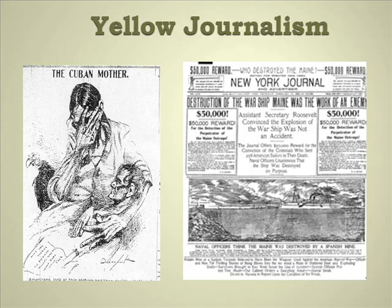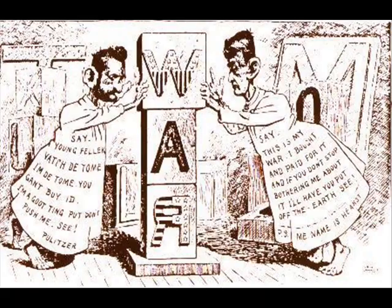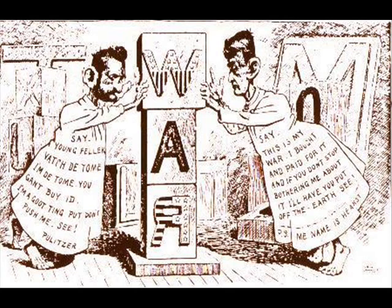At this time, newspapers were the main source of dispensing information for the everyday American citizen. There are two individuals that play a key role in the use of what we know as yellow journalism. The first is Joseph Pulitzer, who owns the newspaper The World. And William Randolph Hearst, who owns The Journal.